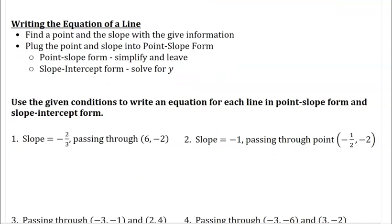When writing the equation of a line, you need a point and a slope. If you only have two points, use them to find the slope first, then plug into whatever form you need. I strongly recommend always starting with point-slope form because it requires no solving, unlike slope-intercept or general form. Start with point-slope and then rewrite if necessary.